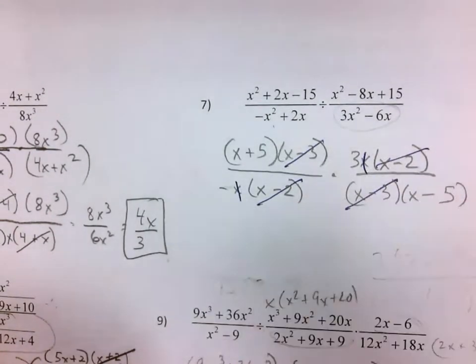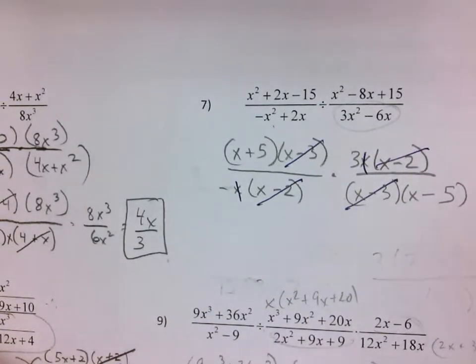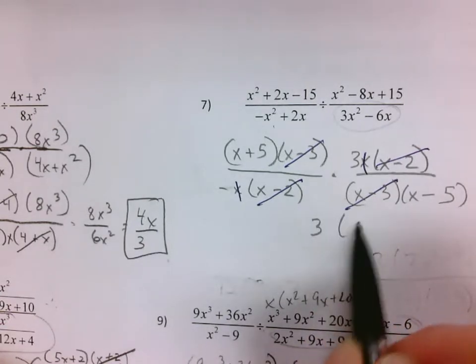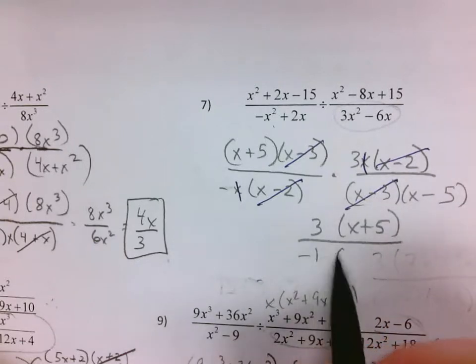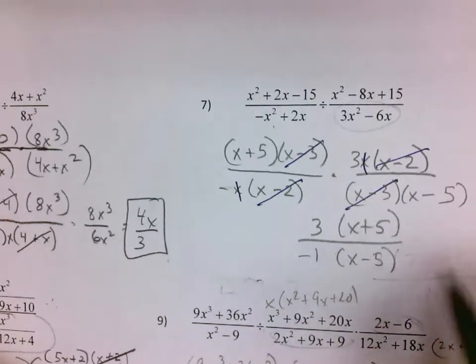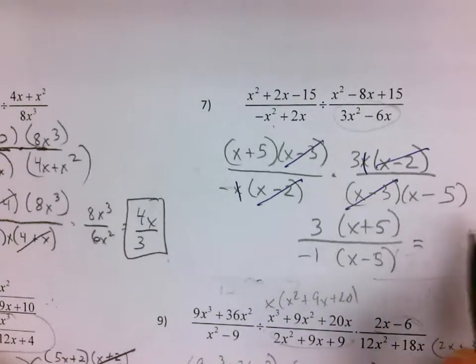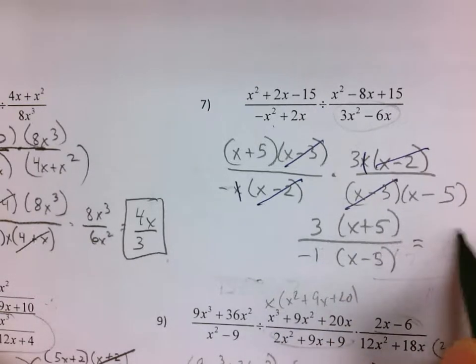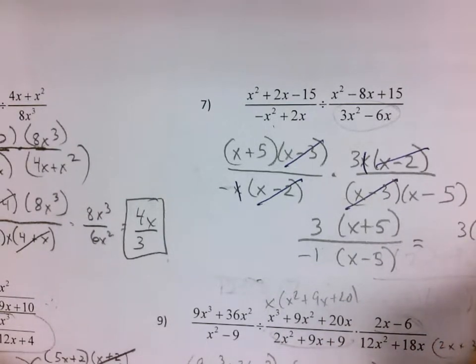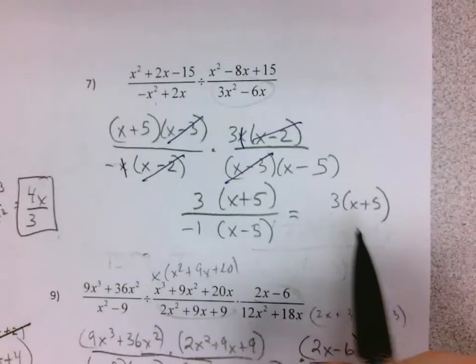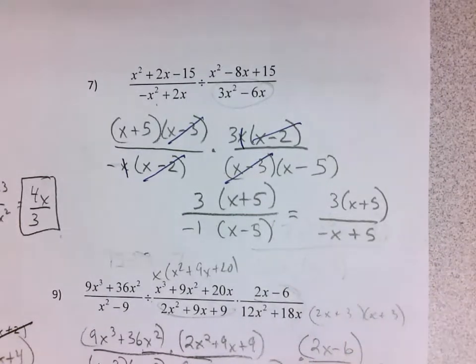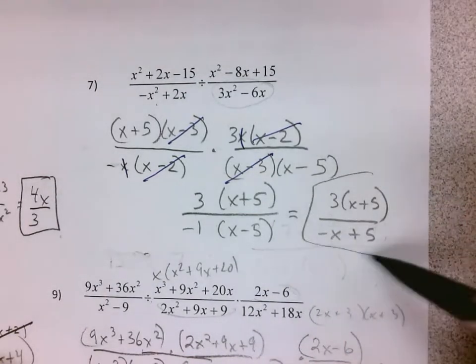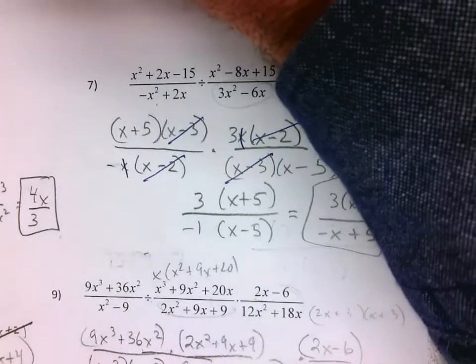can cancel, so I'm left with 3 times x plus 5 over negative 1 times x minus 5. So you can put the negative out front, you can put it in here, you just put it there. Negative x plus 5 or 5 minus x, it doesn't matter at that point what form you put it in. That's it.